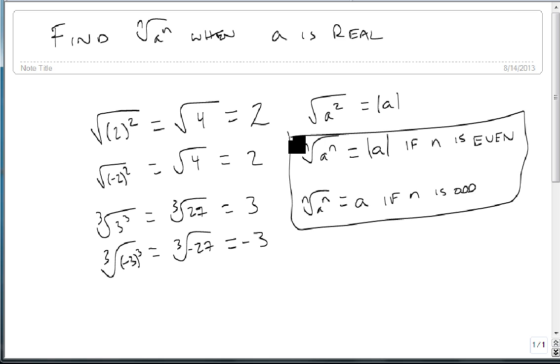Let's look at some examples. We're going to use this rule directly to simplify these radicals. Suppose we have the square root of x squared.